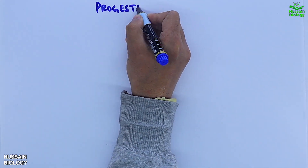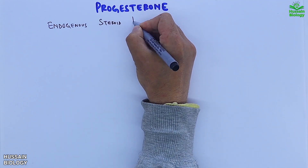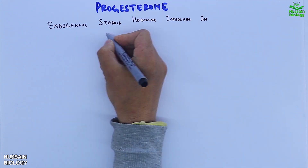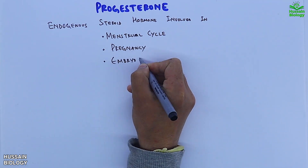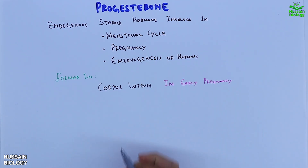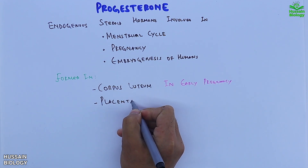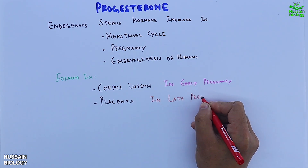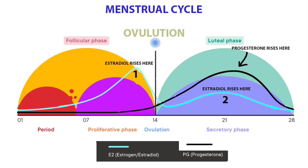The second important hormone is progesterone, an endogenous steroid hormone involved in the menstrual cycle, pregnancy, and embryogenesis. This hormone is formed in the corpus luteum in early pregnancy and in the placenta during late pregnancy. Progesterone is present during the luteal phase of the menstrual cycle, as shown in the diagram.